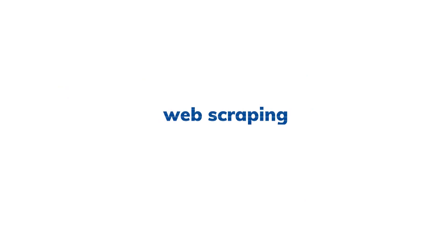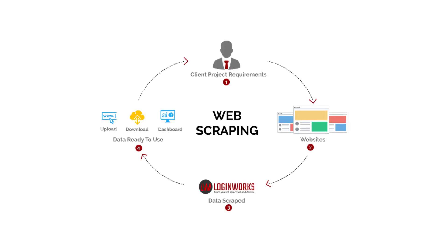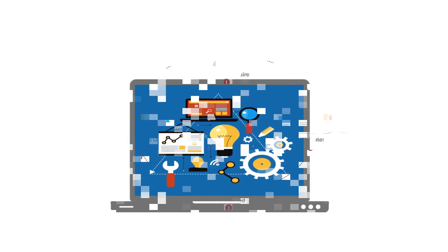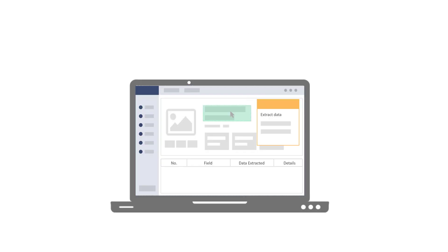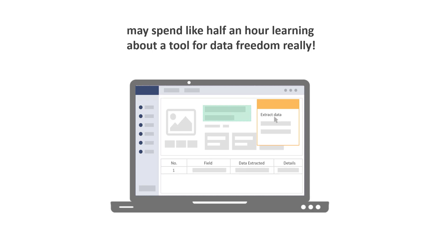So, is there a better solution out there? The answer is yes: web scraping. According to Wikipedia, web scraping is data scraping used for extracting data from websites. It is a form of copying in which specific data is gathered and copied from the web, typically into a central local database or spreadsheet, for later retrieval or analysis. Once you know how to do web scraping, you can easily retrieve the data you need from any web pages by creating a coded scraper or using a ready-to-use web scraping tool. You may spend just half an hour learning a tool with which you can scrape any information you need from any website.